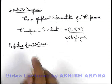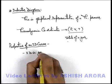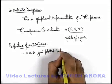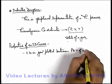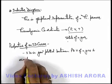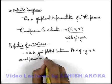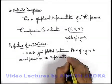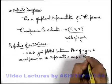The very first property of an indicator diagram is that it is generally plotted between pressure and volume of a gas. Each point on the indicator diagram represents a unique state of the gas.